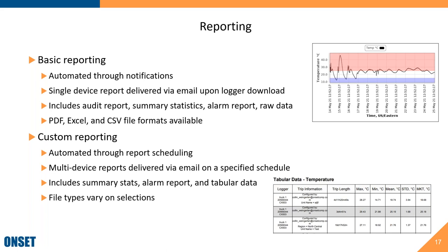On to reporting. We have basic reporting, which can be automated, and custom reporting. For basic reporting, you have a single device report for one logger and one configuration. The report includes an audit report — who did what with the logger — summary statistics, an alarm report, and raw data. With notifications set up, you can automatically get a copy of this report via email as soon as a download is done. Reports are offered in PDF, Excel, and CSV formats.